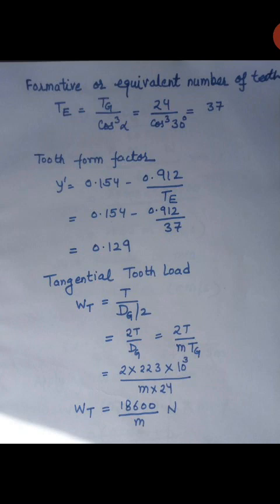Next, we will calculate the formative or equivalent number of teeth. We know the equation Te equal to Tg upon cos cubed alpha, where Te is the equivalent number of teeth. Putting the value of Tg as 24 and alpha as 30 degrees, we get Te equal to 37.